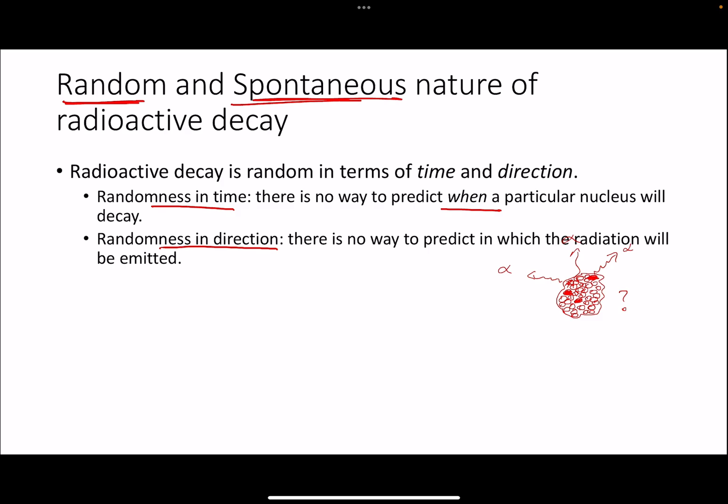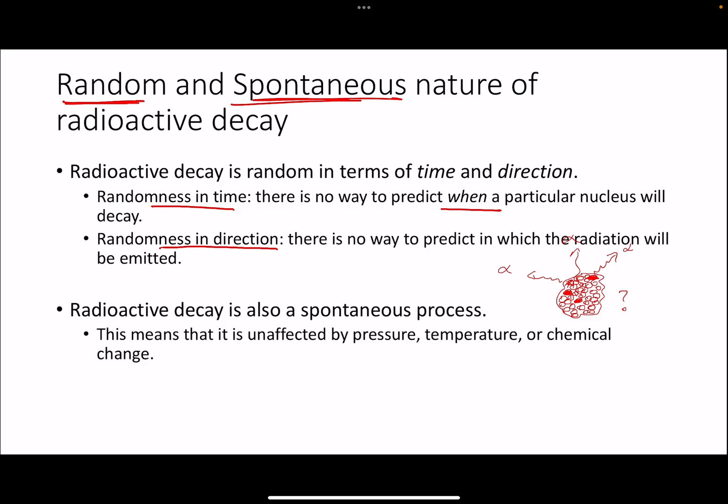So that's about randomness. Now let's also understand what does it mean to be spontaneous. To be spontaneous basically just means that you cannot do anything to change the process of radioactive decay. You can't speed it up, you can't slow down the process.